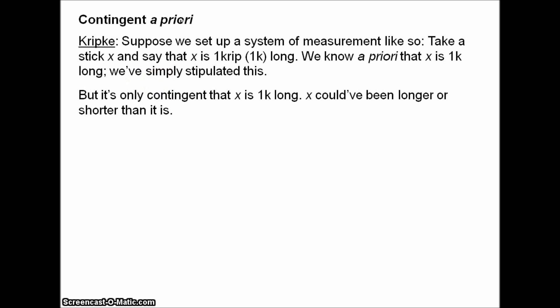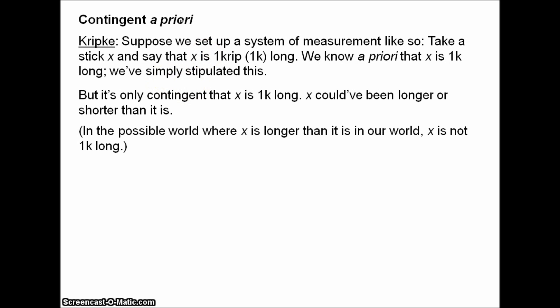But it's not necessary that X is one K long — it's only contingent. X could have been longer or shorter than it is, in which case it wouldn't be one K, because one K is the length of the actual stick X. In the possible world where X is longer than it is in our world, X is not one K long. So perhaps that's a contingent a priori truth.